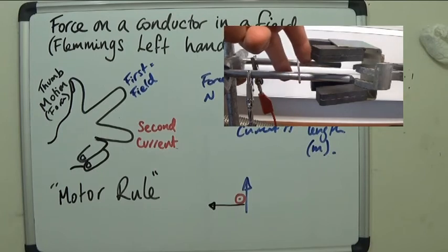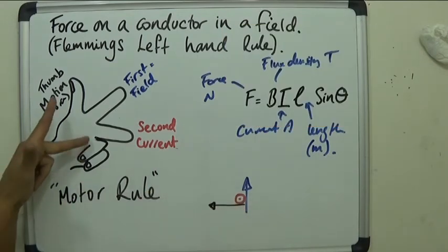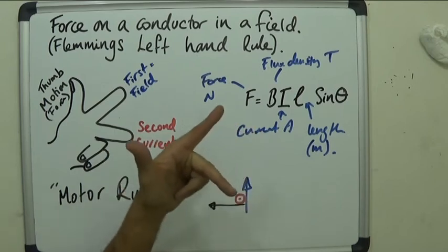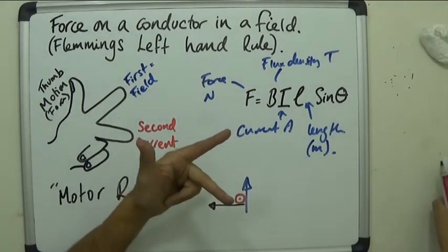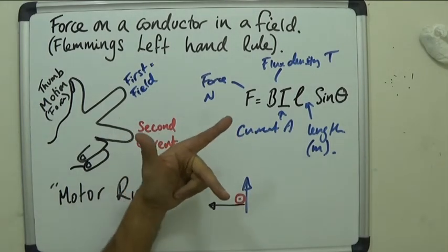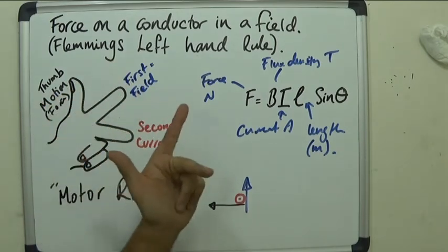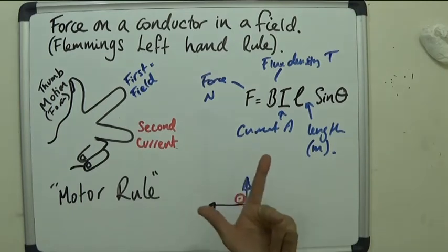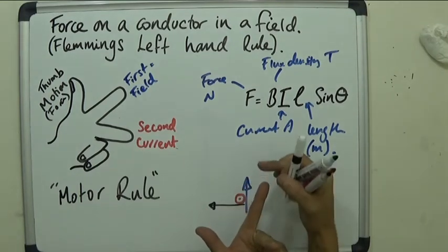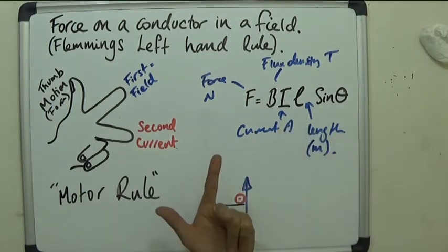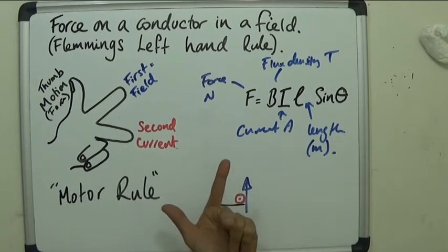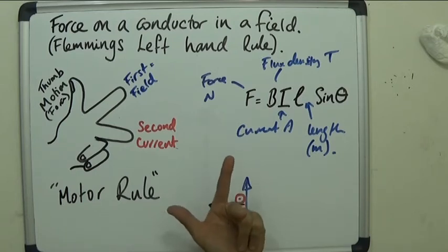Now, this is explained by Fleming's left hand rule. And as you see here, you have to make a shape like this, your thumb is the direction of the force or the motion that it experiences, first finger is the field, direction of the field, and the second is the direction of the current. So, if you do this, this would be the field going up, as we had in our first example, the current is going towards us. We remember that the rod rolled to the left.